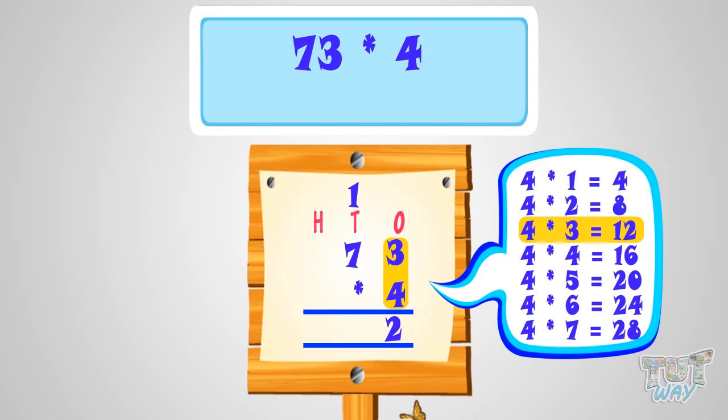Now, multiply 4 with the next number. That is, 7. 4 multiplied by 7 equals 28. And we have 1 carry. So, adding it to 28, we get 29. Now, write 29 in the product. 292 is the answer or is the product of 73 and 4.